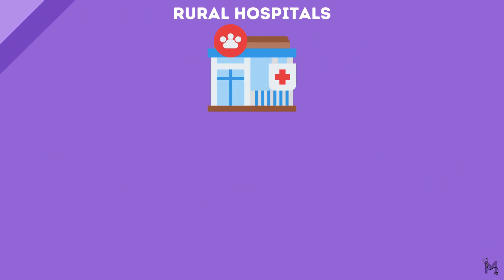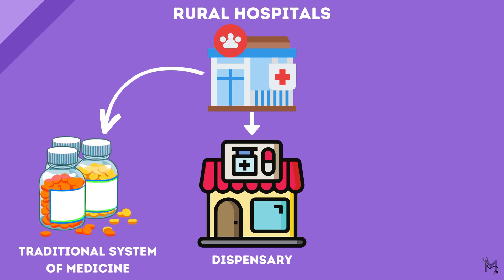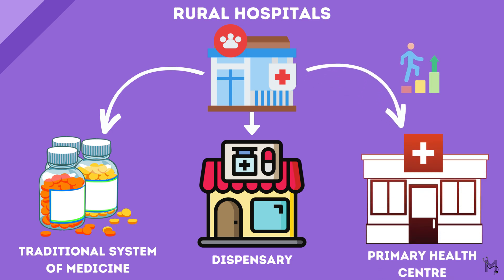Rural hospitals are basically dispensaries in rural areas which provide traditional systems of medicine. It is on our government's agenda to try and upgrade these hospitals to primary health centres as soon as possible.